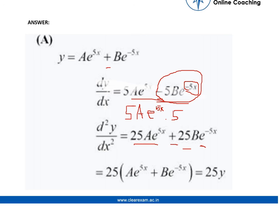We take 25 as common, and the remaining expression ae^(5x) + be^(-5x) is the same as y. So the final answer is d²y/dx² = 25y.